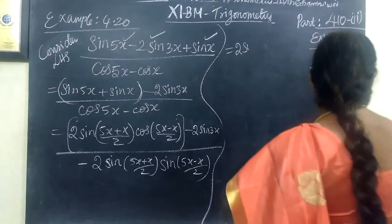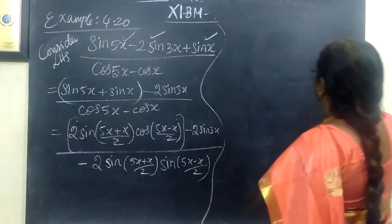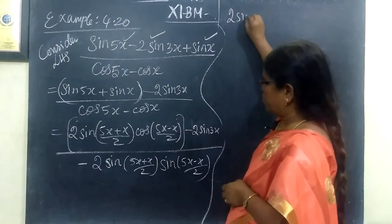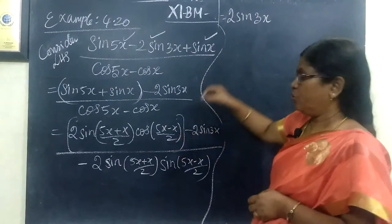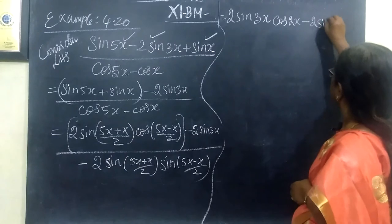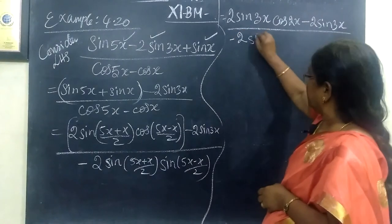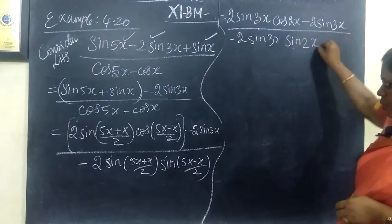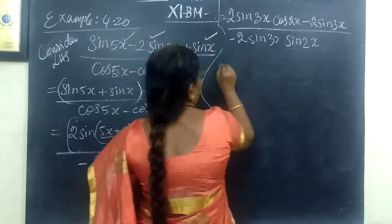So here you are writing 2 sin 3x. It is 4x or 4x by 2 is 2x. Then cos 2x minus 2 sin 3x. 3x, then sin 2x. 4x minus 2 by 2 is sin 2x. So this is equal to.